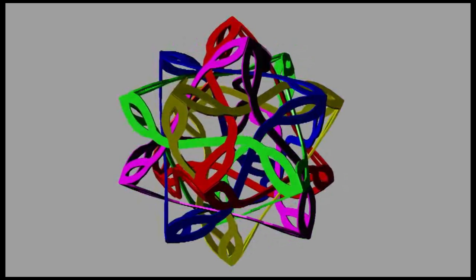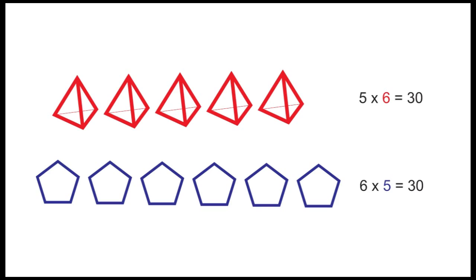So what does keep this sculpture together? Each of the five tetrahedra has six edges, making 30, and each of the six pentagons has five edges, also making 30.